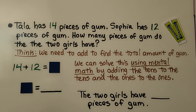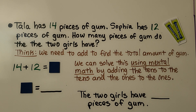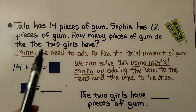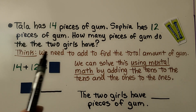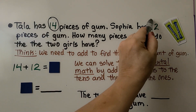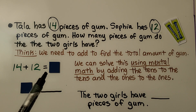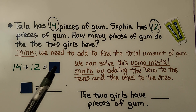Tala has 14 pieces of gum. Sophia has 12 pieces of gum. How many pieces of gum do the two girls have? Our important numbers are 14 and 12. We're going to add 14 and 12. We write our equation: 14 plus 12 is equal to some number, so we put a box here for our sum.